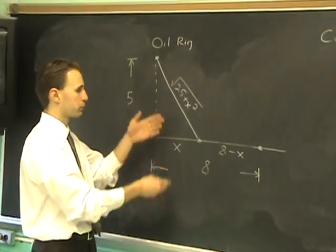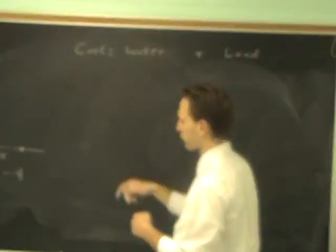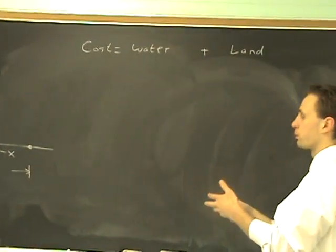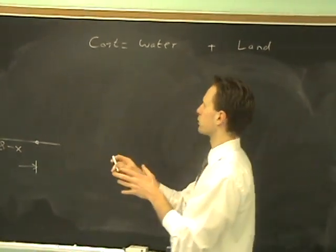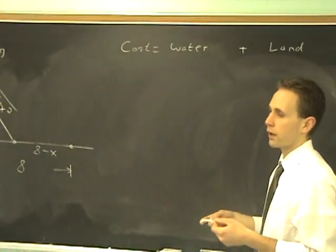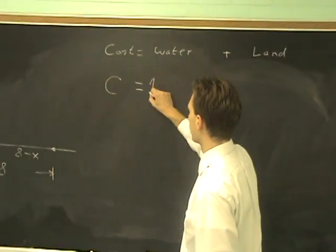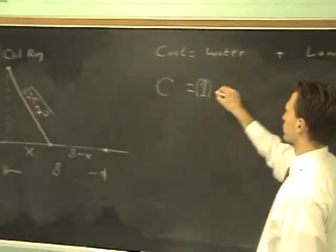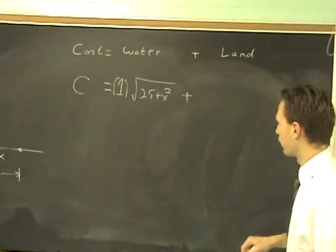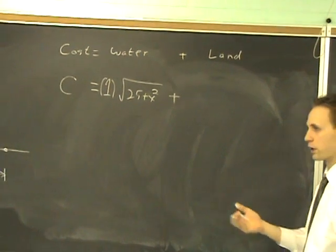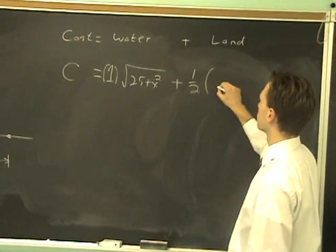To get our cost functions, all that we have to do is multiply these distances by their respective costs. To ease up on our calculations, we'll make our cost in millions. We said it was 1 million dollars per water mile, so the total water cost C is going to be 1 times the water distance, which is square root of 25 plus x squared. Add to that the land cost, half a million times the land distance, 8 minus x.